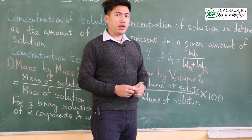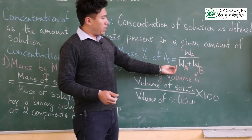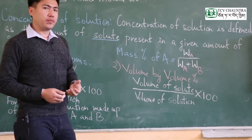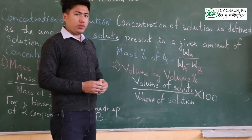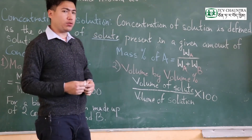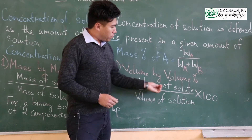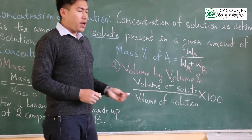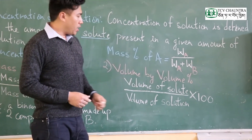The solution is formed by solute plus solvent, giving W_A plus W_B as the total mass of solution. For percentage calculation, you take the mass of solute divided by mass of solution and multiply by 100. Similarly, for volume by volume percentage, you use the volume of solute in the numerator and volume of solution in the denominator, multiplied by 100.